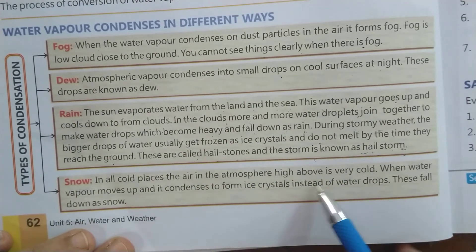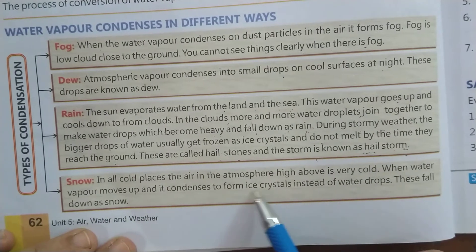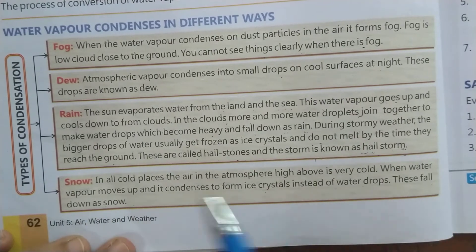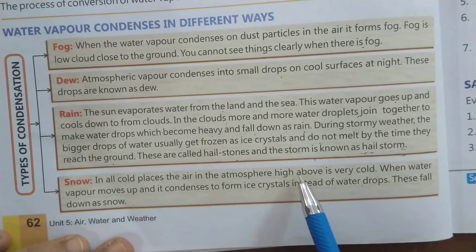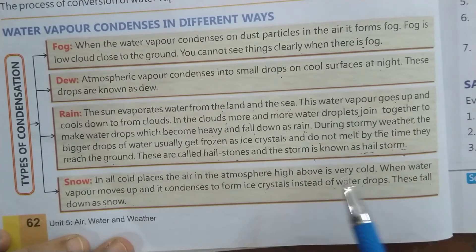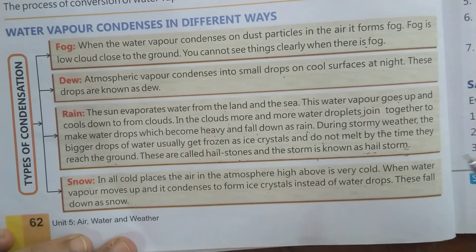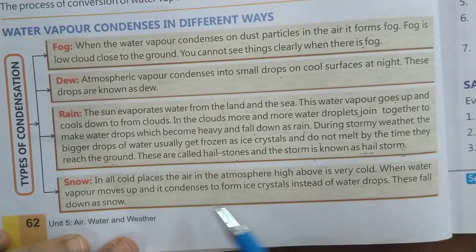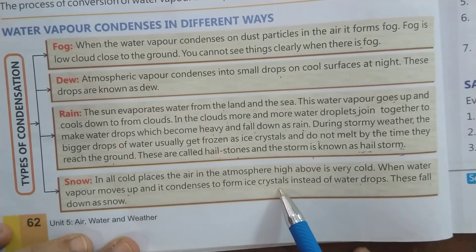Snow: in cold places, the air in the atmosphere high above is very cold. When the water vapor moves up, it condenses to form ice crystals instead of water drops — these fall down as snow. Cold places में जैसे-जैसे ऊपर जाएंगे, वैसे-वैसे temperature बहुत कम होता जाता है। जब water vapor ऊपर जाते हैं तो वे condense होकर water drops की जगह ice के crystals में form हो जाते हैं, और फिर यह ice crystals snow के रूप में नीचे गिरते हैं।